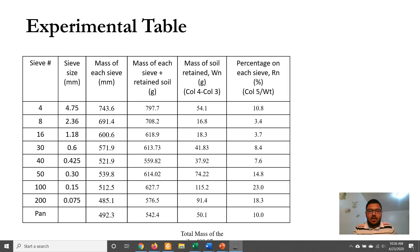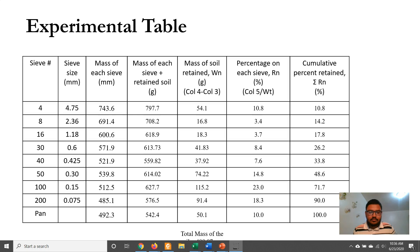Percentage on each sieve can be determined by dividing the mass of retained soil with the total weight of the soil. Then, the cumulative percent retained can be calculated. Percentage finer can be determined by subtracting the cumulative percent retained from 100.